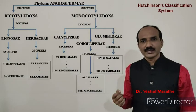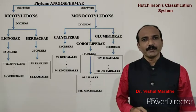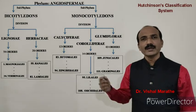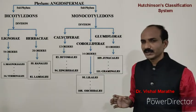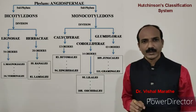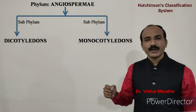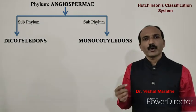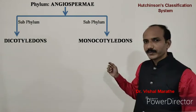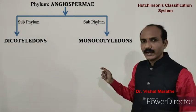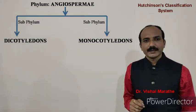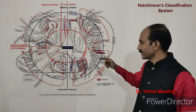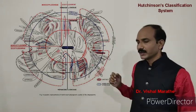Hutchinson divided phylum Angiospermia into two sub-phyla, Dicotyledonae and Monocotyledonae, on the basis of number of cotyledons present within the seeds. Dicotyledonae were considered more primitive and placed before Monocotyledonae. He also provided a phylogram for his system, which is important for determining the phylogenetic relationships of taxa. In his phylogram, he clearly showed how monocots are derived from Ranales.